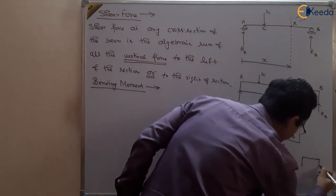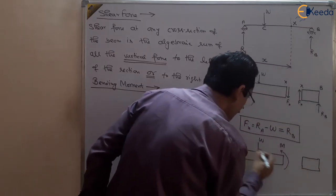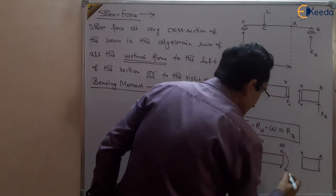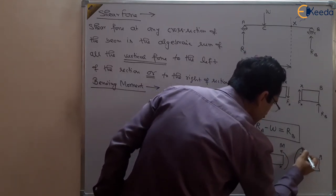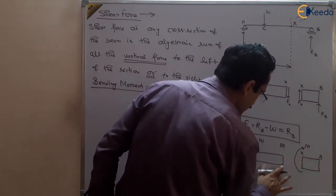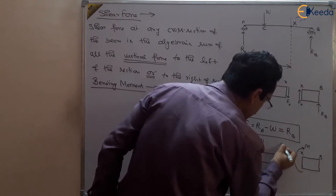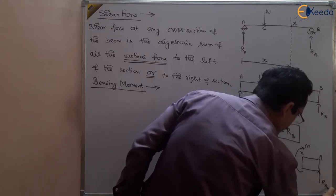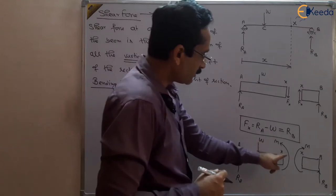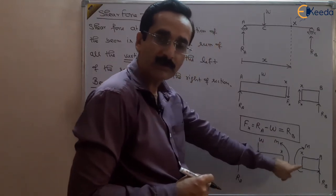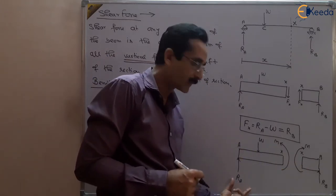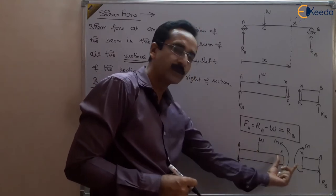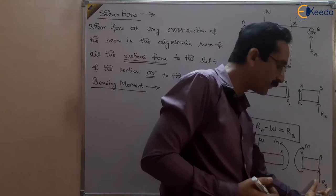Also, looking at this part: this is A, X — this is A point, X point, and this is XB. There will be a clockwise moment in this direction. At the same part of the beam, here it is anticlockwise and here it is clockwise. RA tries to rotate the beam, and W is also trying to rotate the beam. Suppose it is trying to rotate in clockwise direction; there will be a resisting bending moment developed. The value of this moment at cross section X will be the moment of RA plus or minus the moment of W — the algebraic sum of moments of forces on the left of this cross section, or the moment of forces to the right of this cross section.